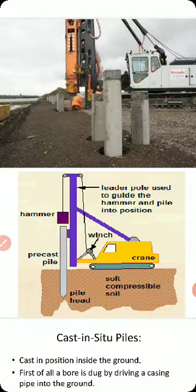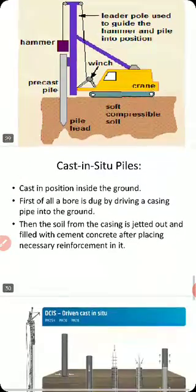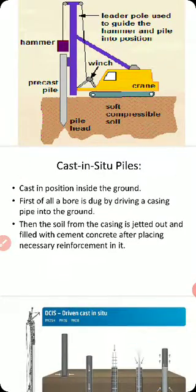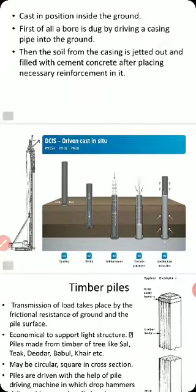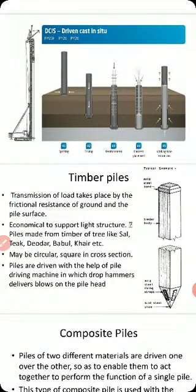Cast-in-situ pile means the pile is cast in its actual position inside the ground. First, a bore is dug by driving a casing pipe into the ground; then the soil is removed from the casing. Then reinforcement is placed and the casing is filled with concrete, and the work proceeds progressively.